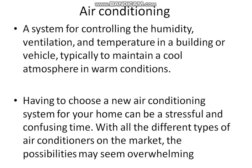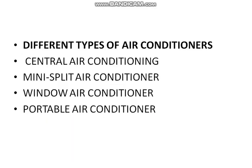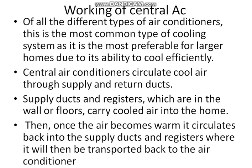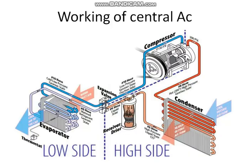How can we use an air conditioning system for thermal comfort? A system for controlling humidity, ventilation, and temperature in a building or vehicle to typically maintain a cool atmosphere is called an AC — air conditioning system. There are different types: central air conditioning, mini-split air conditioning, window air conditioning, and portable air conditioning. Nowadays, central air conditioning is used mainly in halls, shopping malls, theaters, and restaurants, while split air conditioning systems are used in rooms and homes.